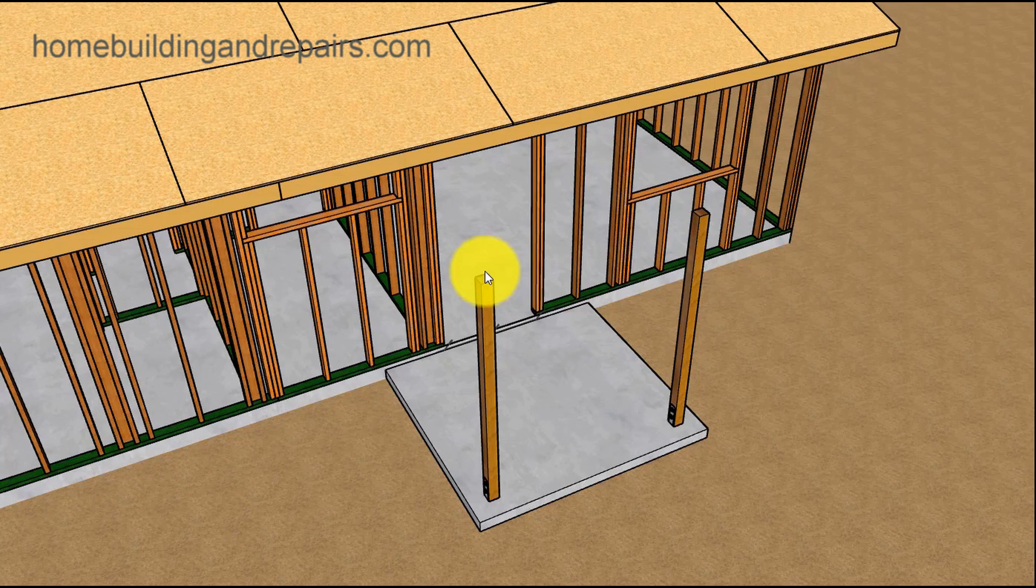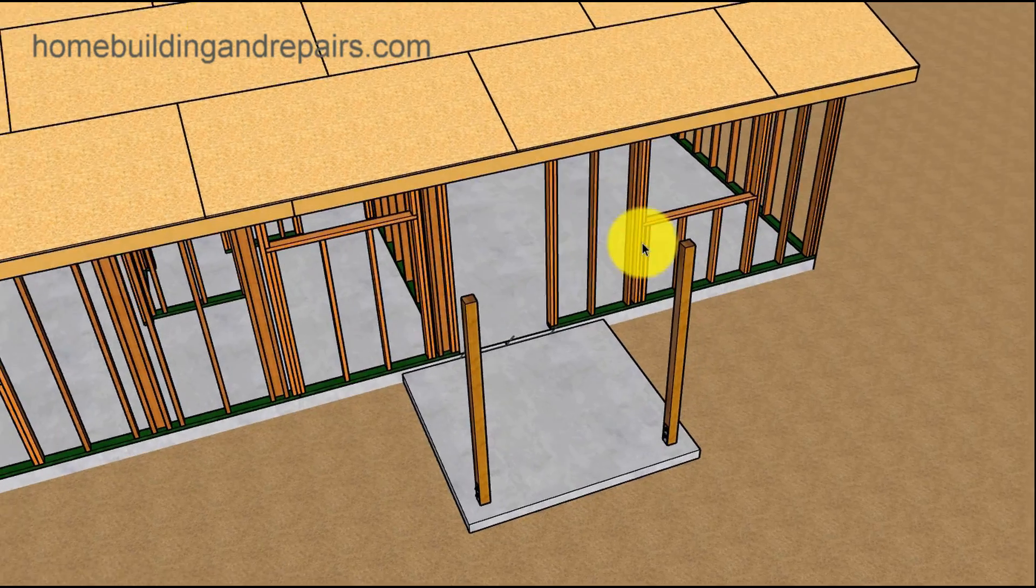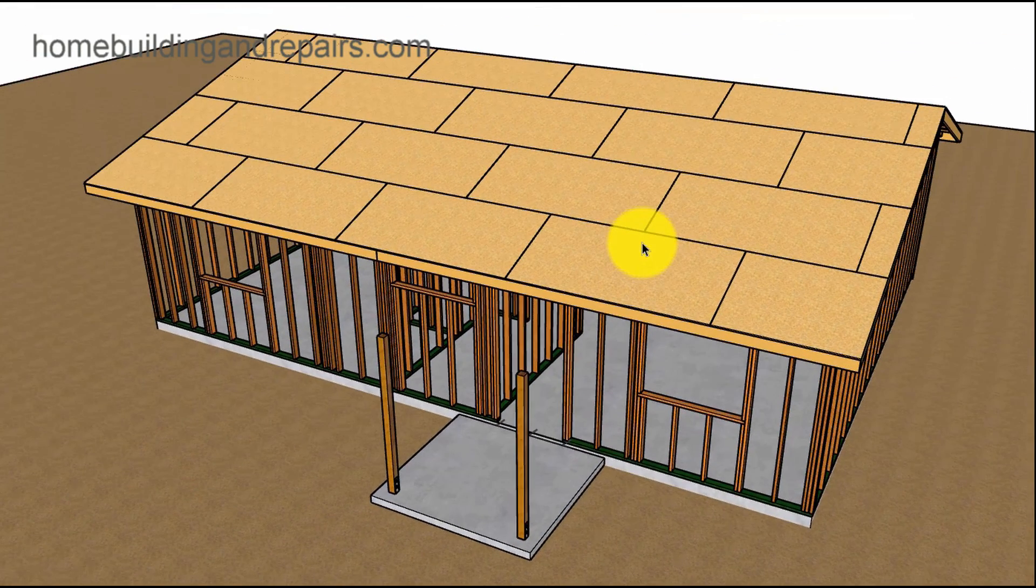In this video I will provide you with an example of how you can build a porch roof with a gable end on this side. This is six foot by six foot and I'm going to do something a little different.